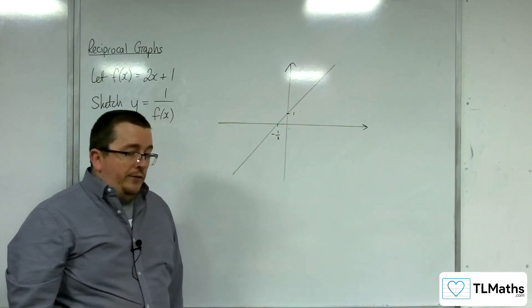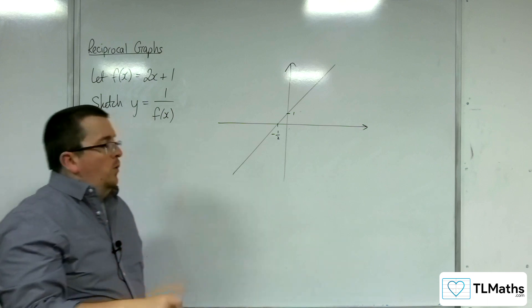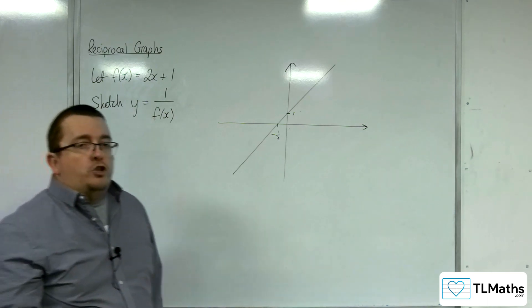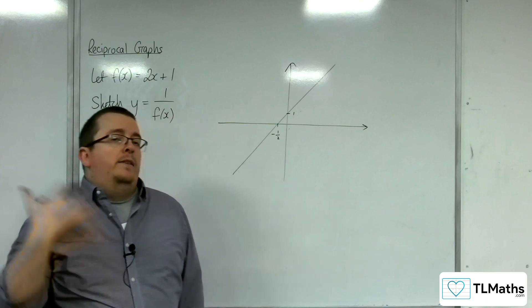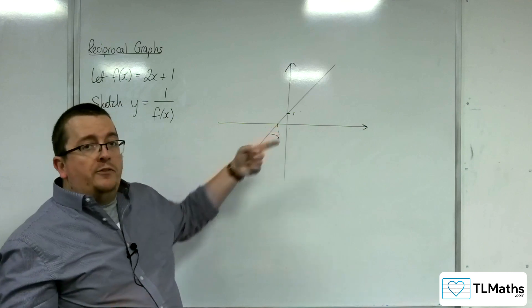Now the point of this is that if you know where the original function is crossing the x-axis, then that means when x is minus 1 half, f of x is 0.